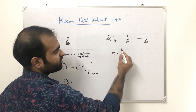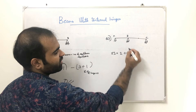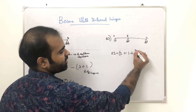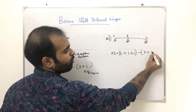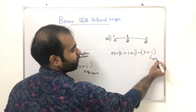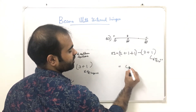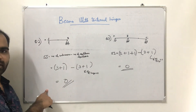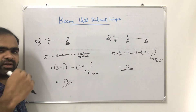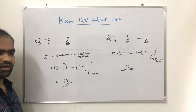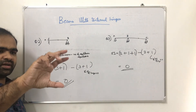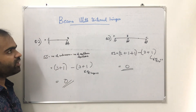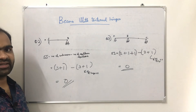In the first case, the number of unknowns plus the other cases minus the equations of equilibrium — that is 3 plus 1, where sigma M at the hinge = 0. In the usual case, the indeterminate structure will be determined the same way.